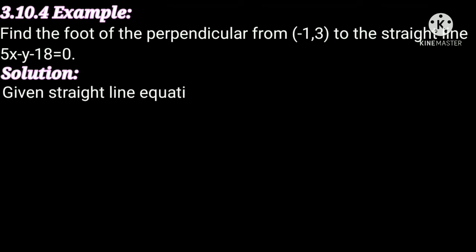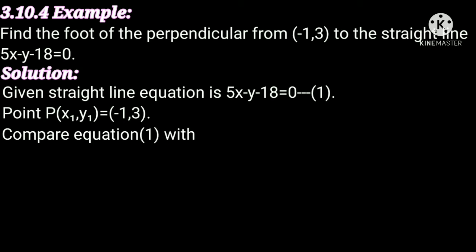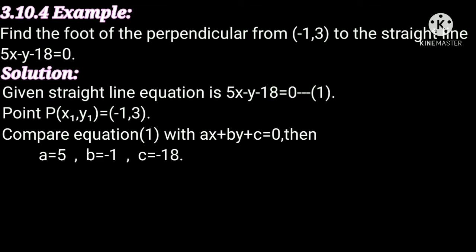Given straight line equation is 5x minus y minus 18 equal to 0. This is equation number 1. Point P(x₁, y₁) equal to (-1, 3). Comparing equation 1 with ax plus by plus c equal to 0: a equal to 5, b equal to minus 1, and c equal to minus 18.